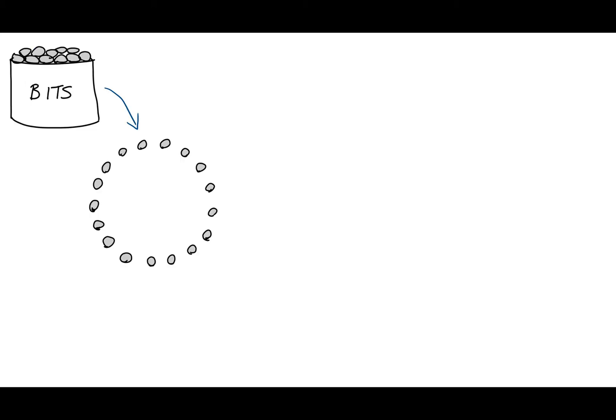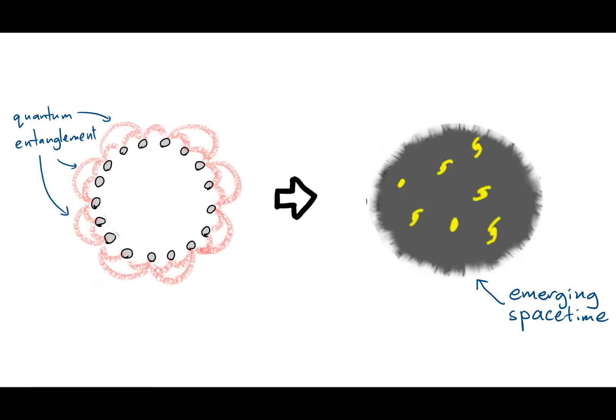I show how starting with a very large number of discrete, non-interacting physical components, or bits, and adding quantum entanglement between these bits in a special way, the physics of a single connected gravitational universe emerges.